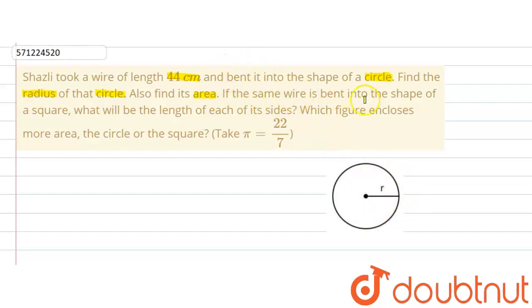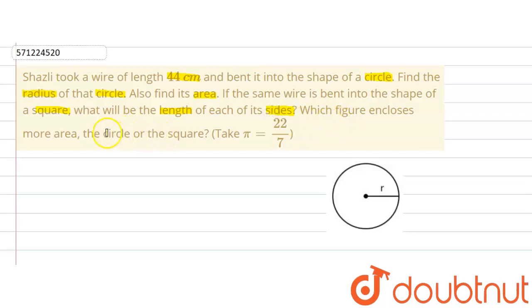Now if the same wire is bent into the shape of a square, what will be the length of each of its sides? This same wire is bent into the shape of a square, and we are supposed to find out the length of the sides of the square.